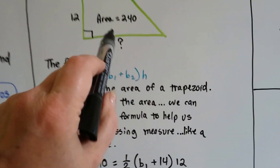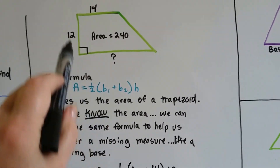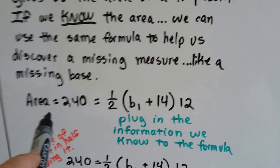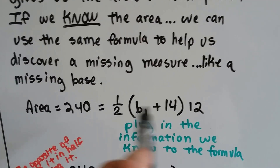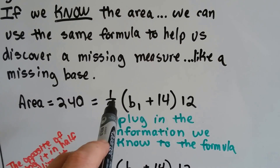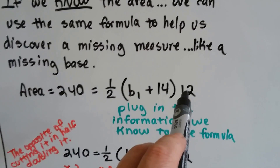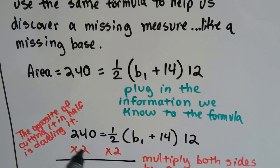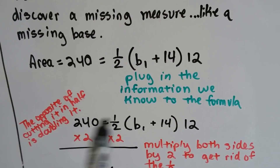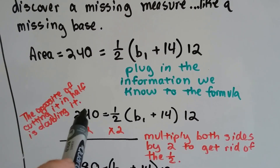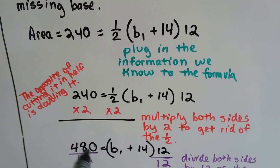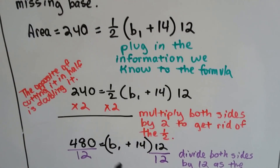Here is the formula. We've got 14 as one base, 12 is the height, and the area is 240, and we plug that into the formula. Everything that we do know, we plug into the formula. So we know the area is 240, so now we've got 240 equals half times base 1 plus 14, times 12, because that's the information we've got. The opposite of cutting something in half is doubling it, so to get rid of this half we're going to multiply both sides by 2. The 240 becomes 480 and now the half is gone. We've got 480 equals b1 plus 14 times 12.